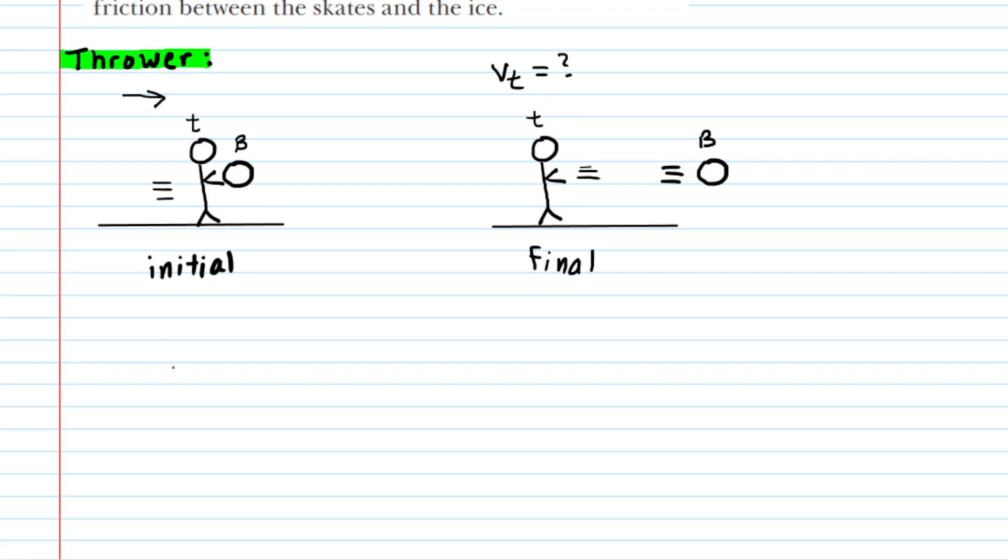To do this we're going to apply the law of conservation of momentum. This tells us that the momentum of the thrower plus the momentum of the snowball initially, so we can put a little subscript initial here,